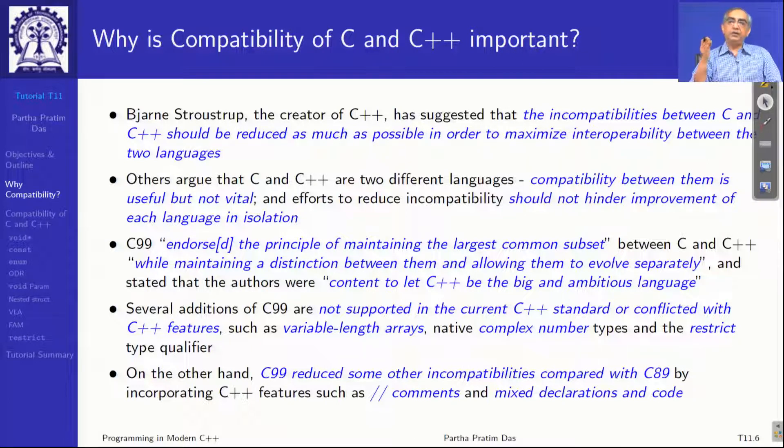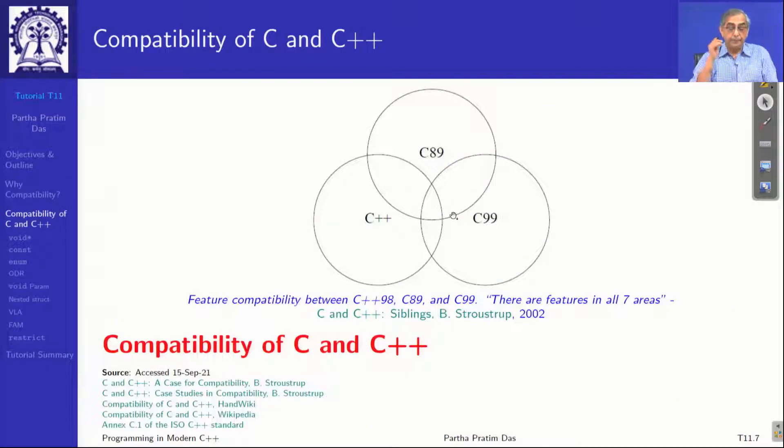So it has always been a vision that C++ should be as compatible to C as possible. Professor Bjarne Stroustrup, the creator, suggests that incompatibilities between C and C++ should be reduced as much as possible to maximize interoperability. Of course, there is a counter view who think that they are different languages and compatibility is useful but not vital because each language has its own philosophy.